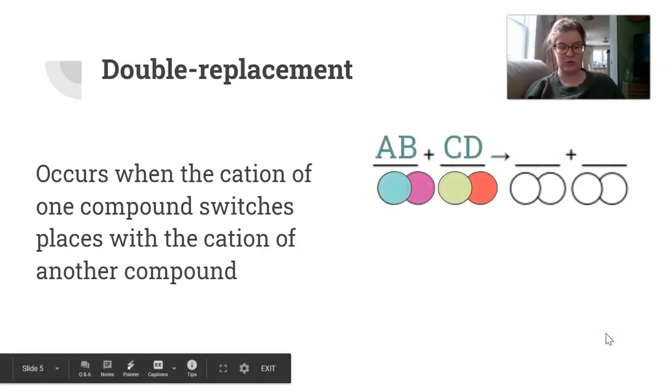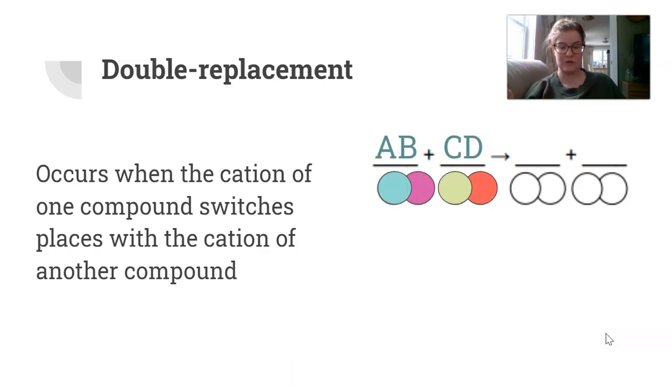We're starting out with two compounds, and then the cations—remember the cation is the thing that's written first, so in this case it's the A and the C—are going to swap places. You'll end up with CB and AD.